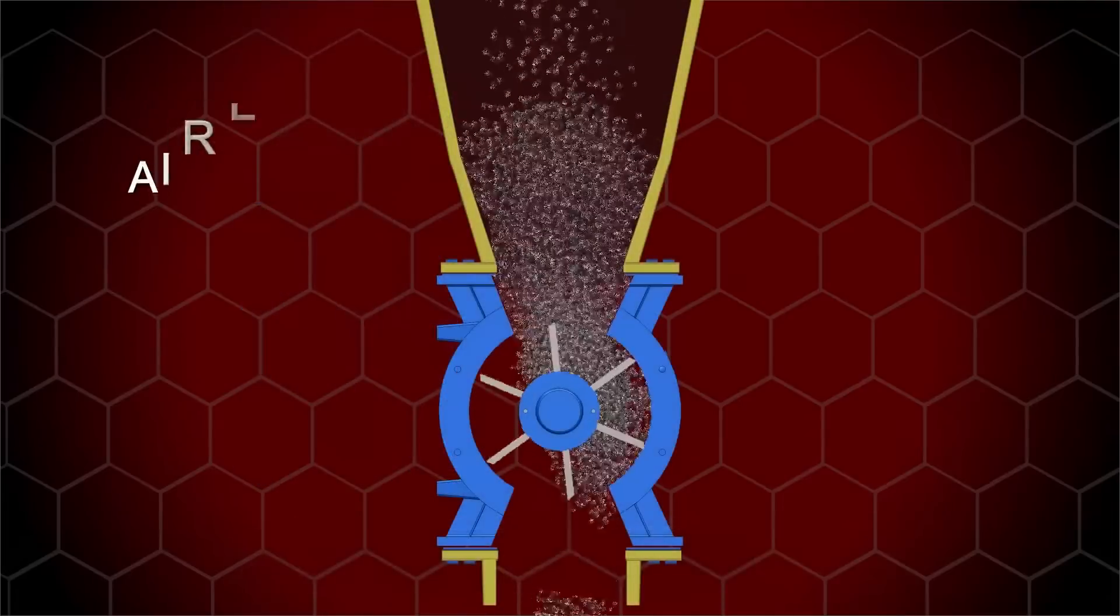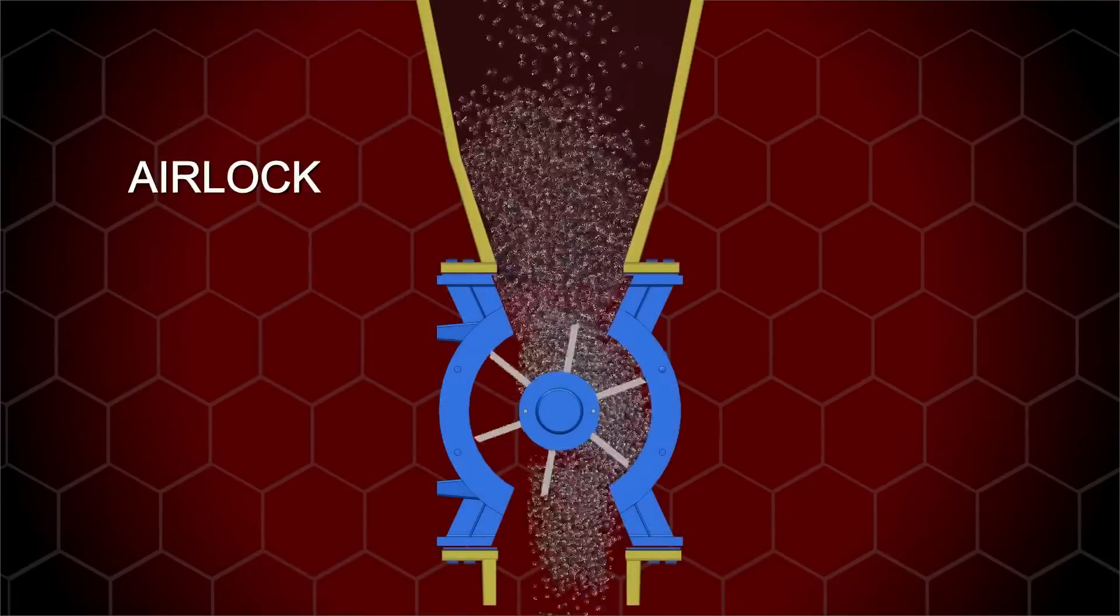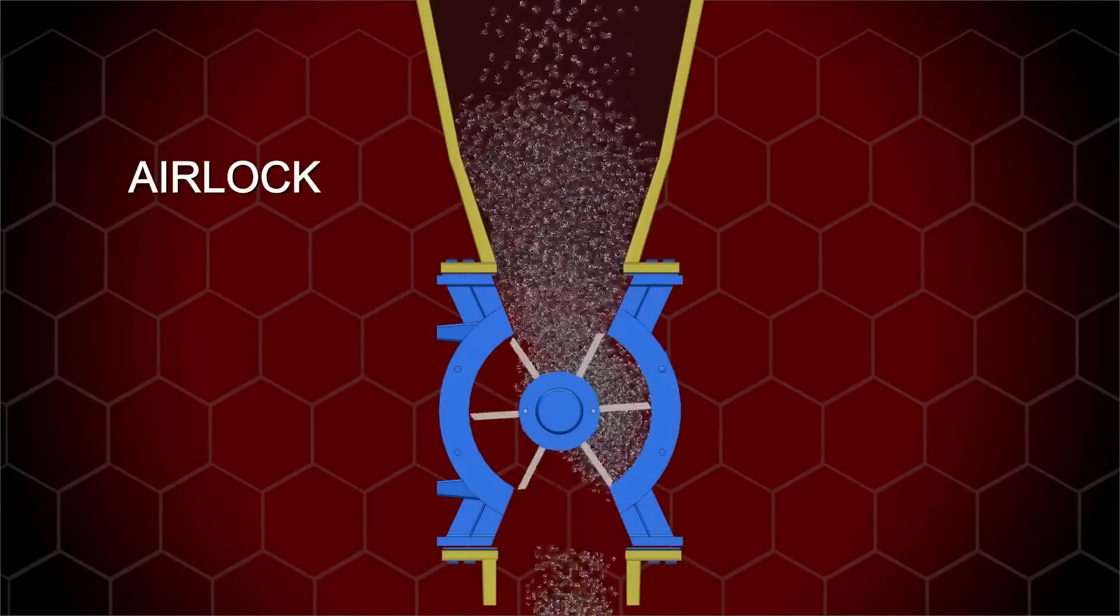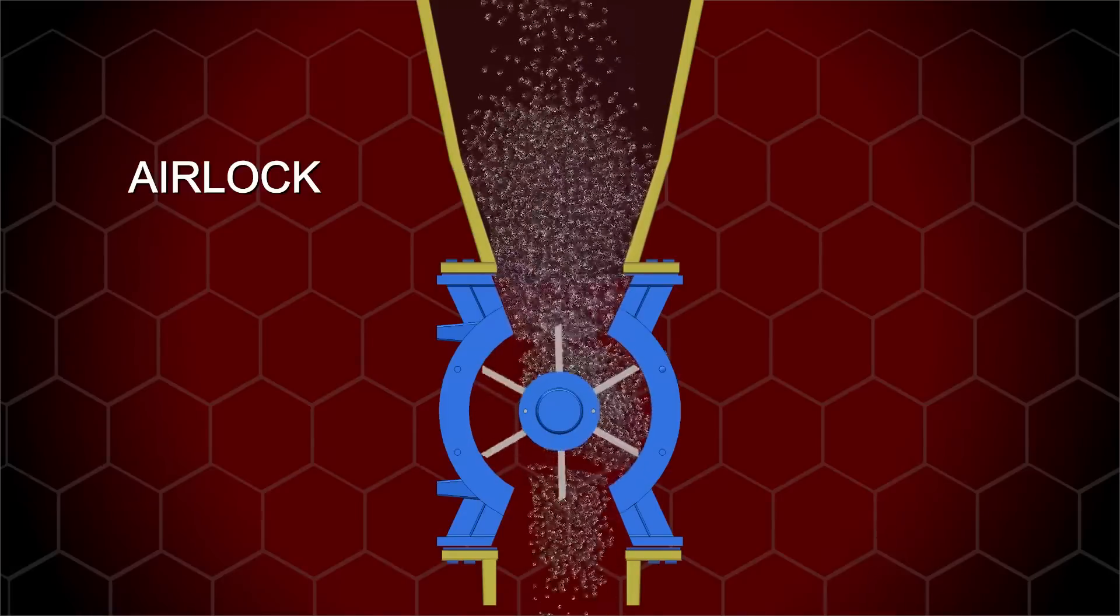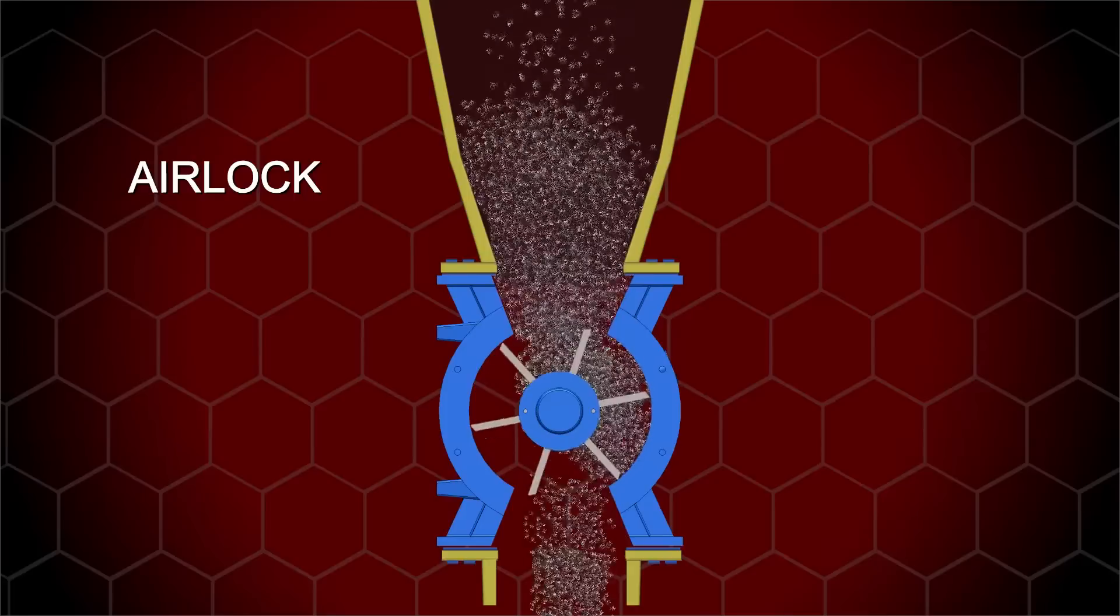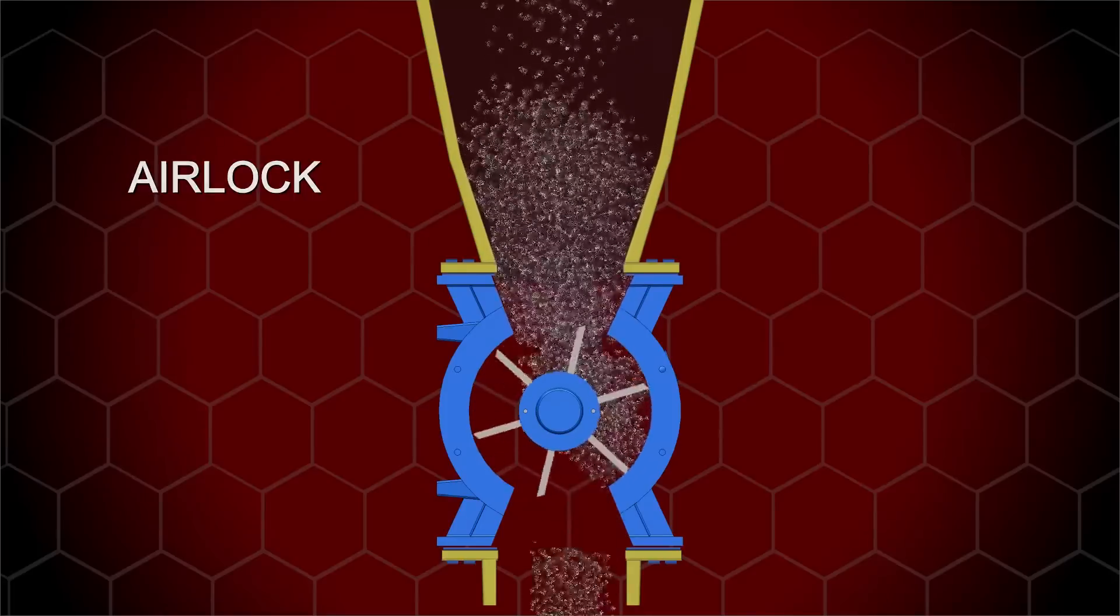The airlock provides a seal between two pressure zones above and below the valve. These can be positive, negative, or sometimes both. The primary concern is handling the pressure differential and minimizing leakage.